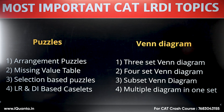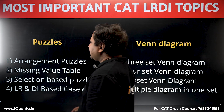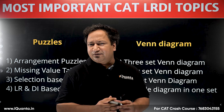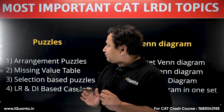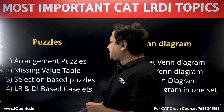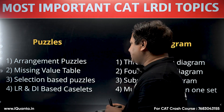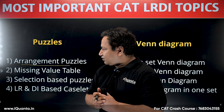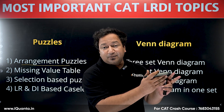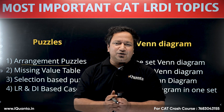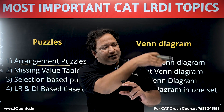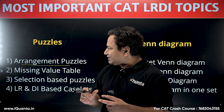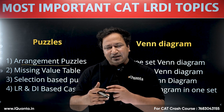Let's discuss the most important category topics. Broadly, LRDI can be classified as Logical Reasoning and Data Interpretation. The first topic is LR puzzles, which have four broad types. The first is arrangement puzzles — a lot of data and statements are given, such as people who like a certain color, cuisine, city, or food, and you have to arrange them accordingly.